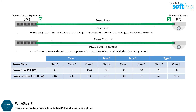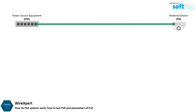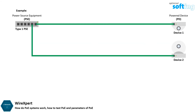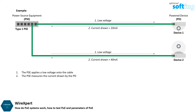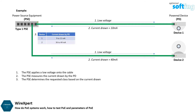Type defines the kind of classification handshake from the PSE to the PD. For example, the PSE applies a voltage onto the cable and measures the current drawn by the PD. The applied low voltage is harmless and will not damage the connected device even if it is not designed for PoE applications. The PSE determines the requested class based on the PD's current draw.